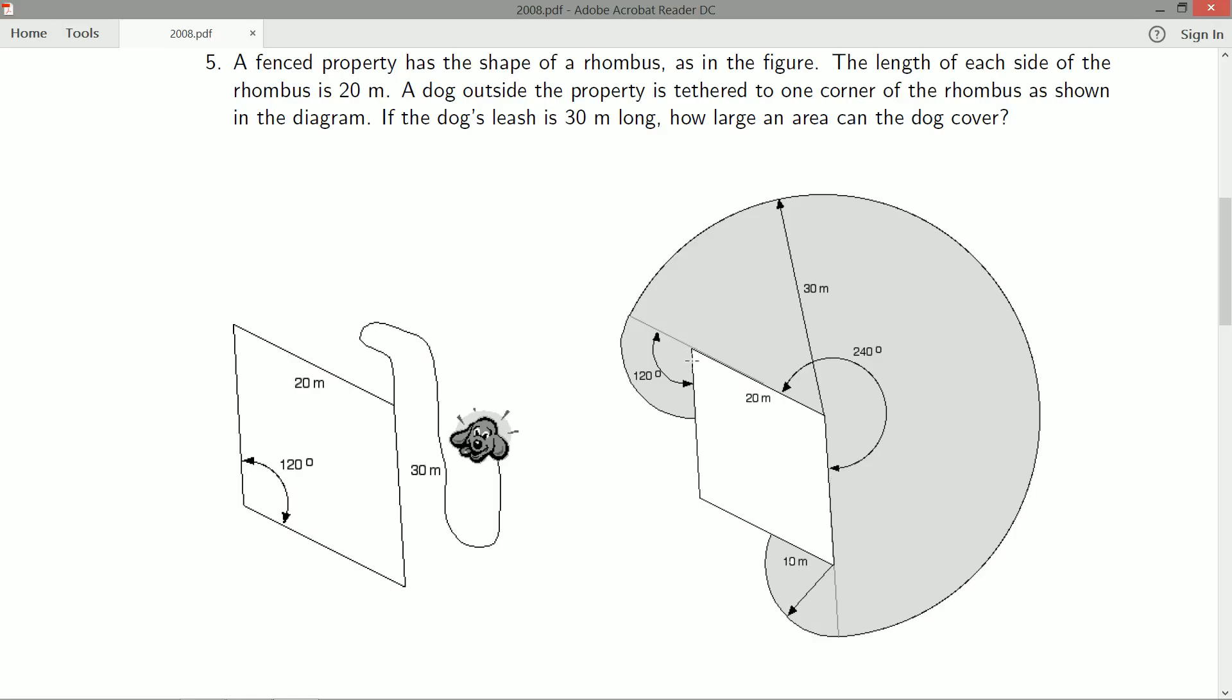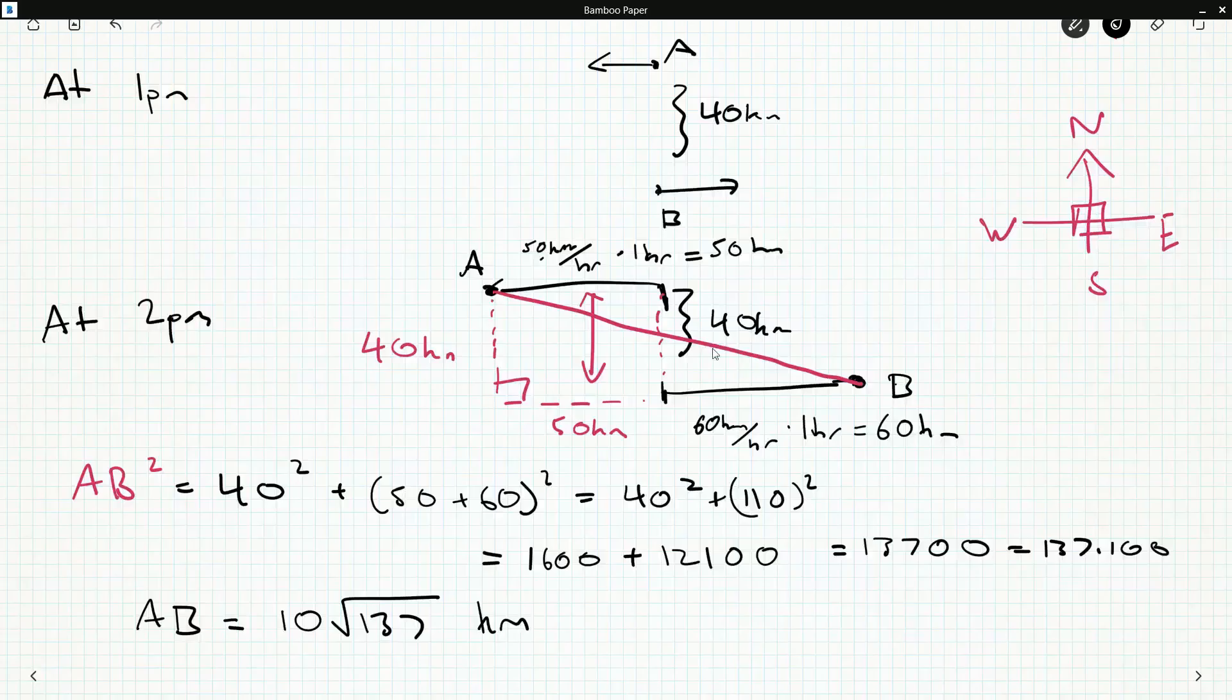So he can sweep out a 30 meter circular arc with a full 240 degree angle because 120 inside here. And then the leash can still bend around the corner a little bit, but obviously 20 meters of the leash is already taken up being pulled tight against the fence, so he's only got 10 meters left here.